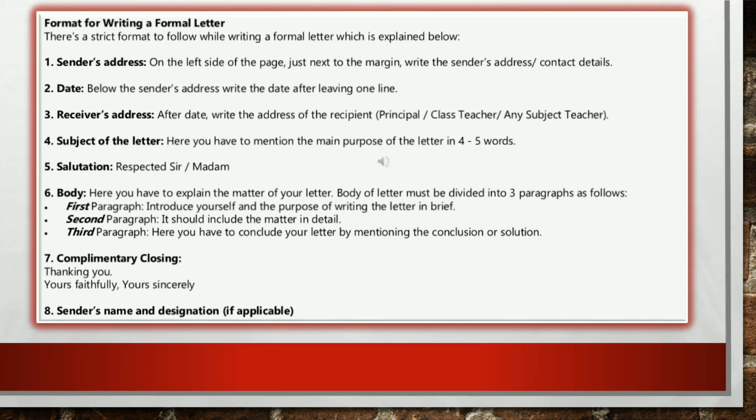The formal letter format for school is as follows. First, the sender's details or address should be displayed on top of the page, followed by the date on which the letter is written. Then comes the receiver's address or details — it should mention to whom the letter is addressed, that is the principal, the class teacher, or any other subject teacher. After that, the most important element is inclusion of the subject of the letter, which should be as precise as possible, followed by the salutation, which is the greeting.